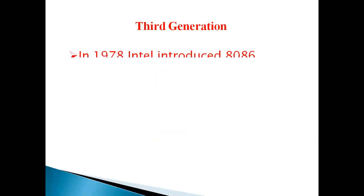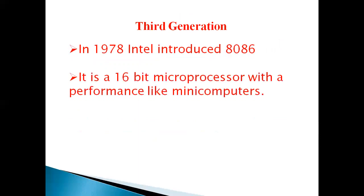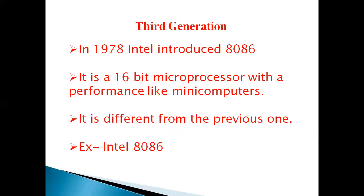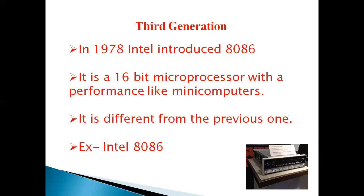Third generation: In 1978, Intel introduced 8086 microprocessor. It is a 16-bit microprocessor with a performance like mini-computer. It is different from the previous generation. Example of this generation is 8086. So this is the image of mini-computer. Mini-computer means it is smaller, less expensive and less powerful.